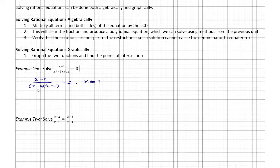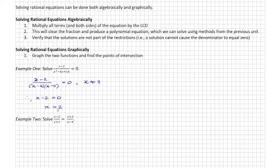Since this is a fraction equal to zero, a fraction is only equal to zero when the numerator is equal to zero. Therefore, x minus 2 has to equal zero, giving x equals positive 2. I check that this solution is not part of the restrictions, so x equals 2 is the answer to the first question.